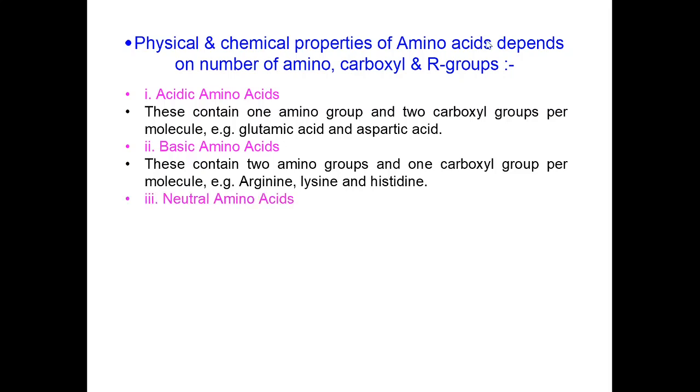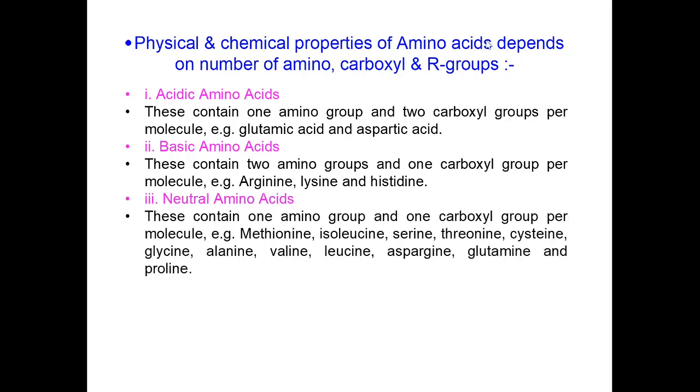Neutral amino acids have one amino group and one carboxyl group per molecule. For example, methionine, isoleucine, serine, threonine, cysteine, glycine, alanine, valine, leucine, asparagine, glutamine and proline.